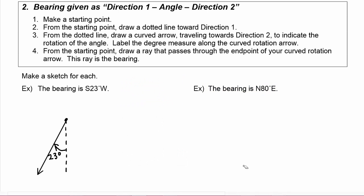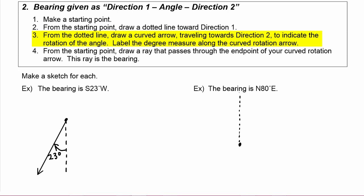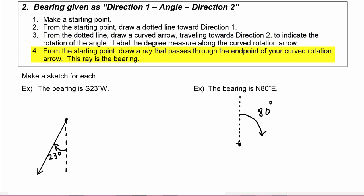Working through the four steps: first we make a starting point. Step two, from the starting point we draw a dotted line towards direction one, which in this case is north. Step three says from the dotted line, draw a curved arrow traveling towards direction two — in our case east — to indicate the rotation of the angle, which is 80 degrees. So from the dotted line we go 80 degrees towards the east and we draw in the ray. There's our bearing of north 80 degrees east, so from our starting point we're looking in this direction.